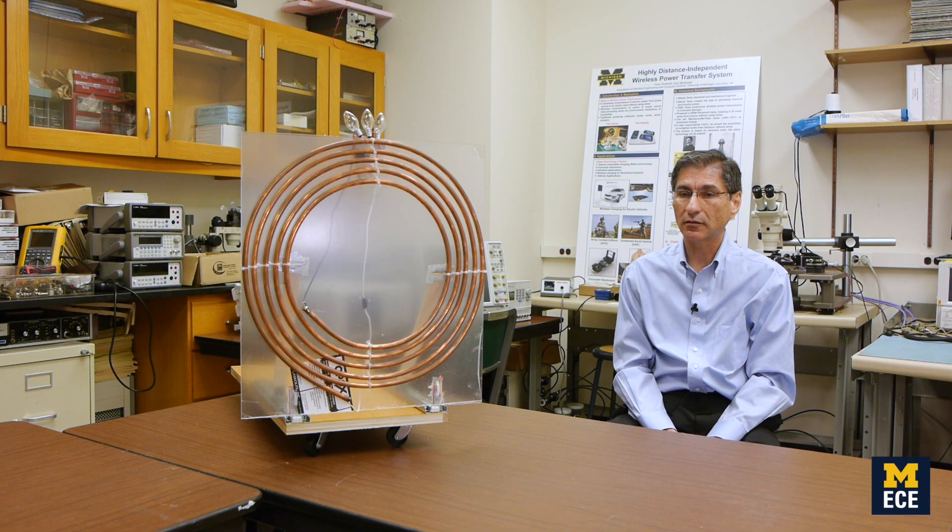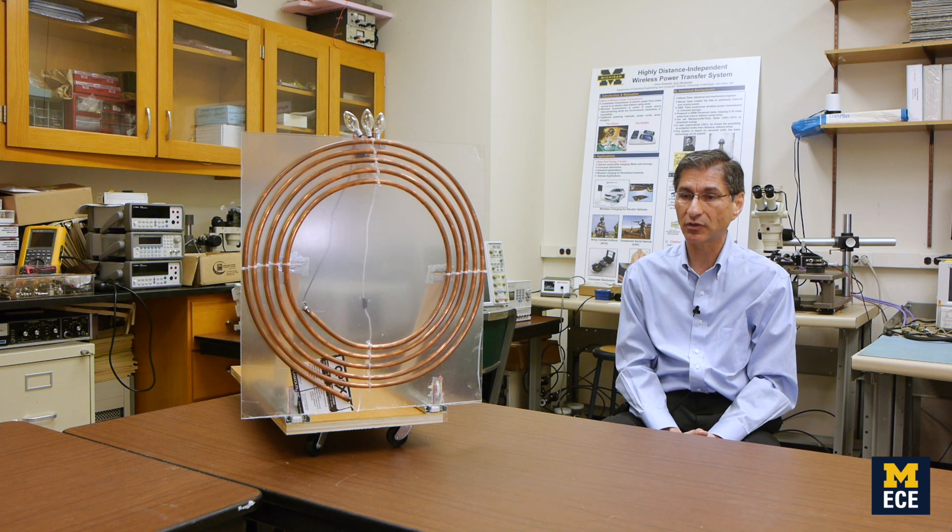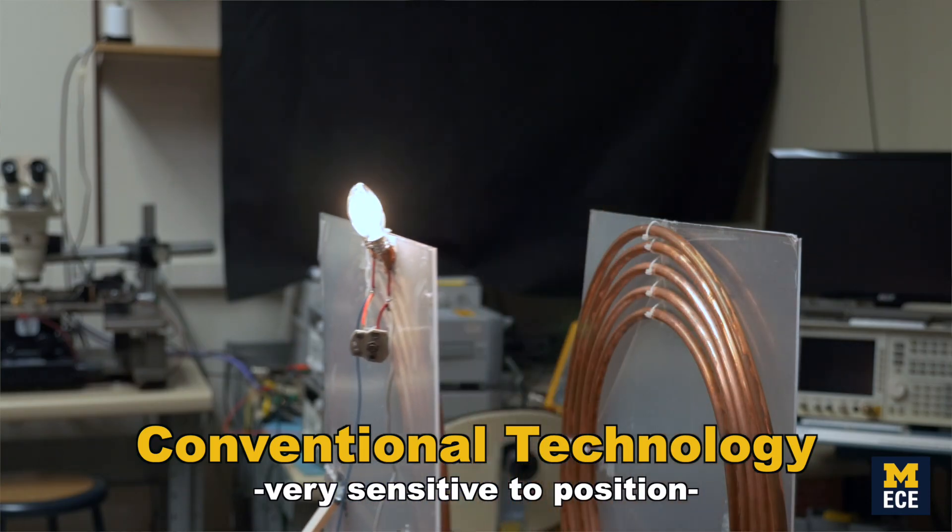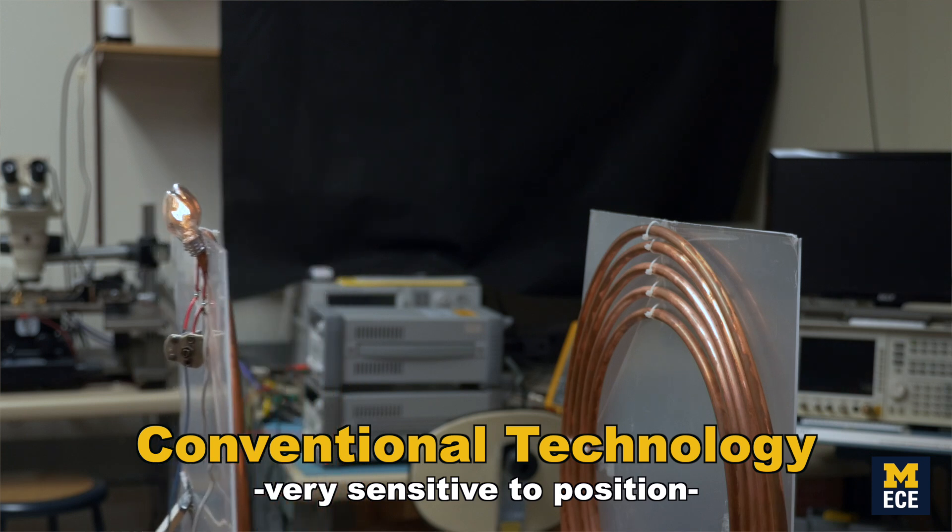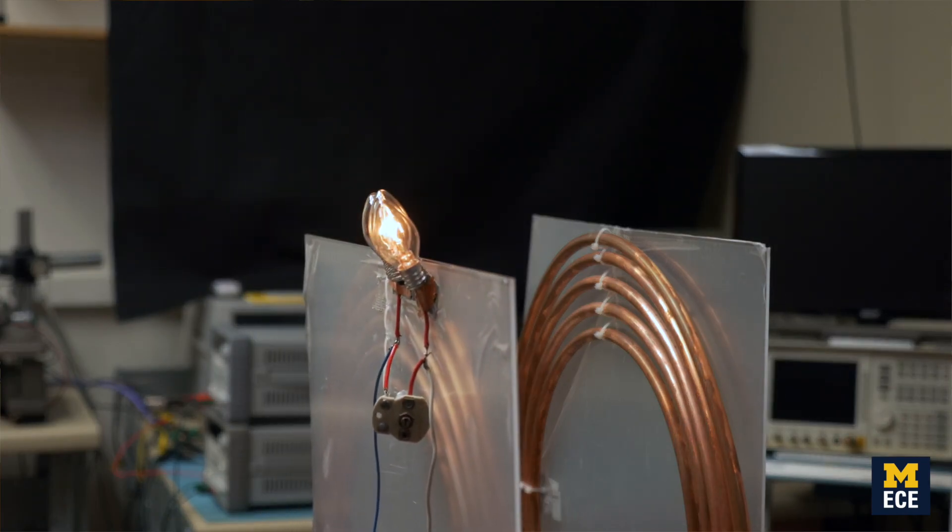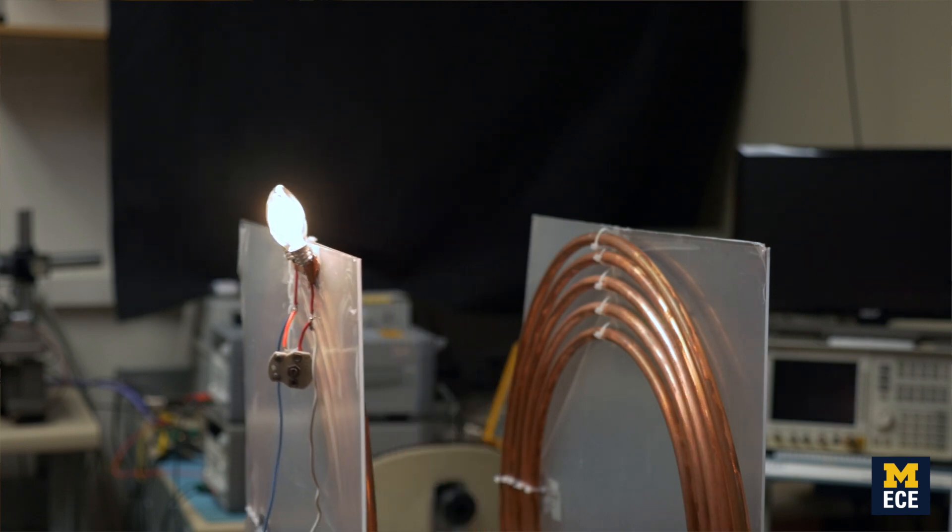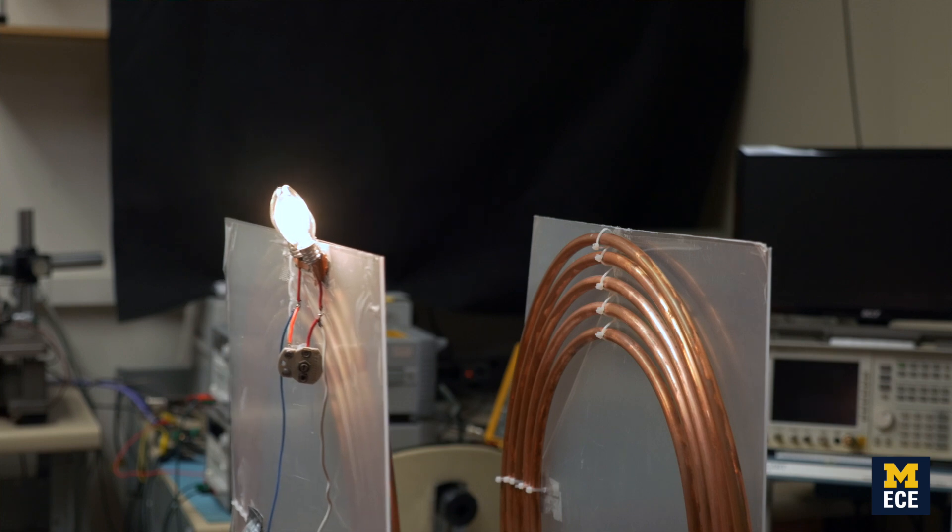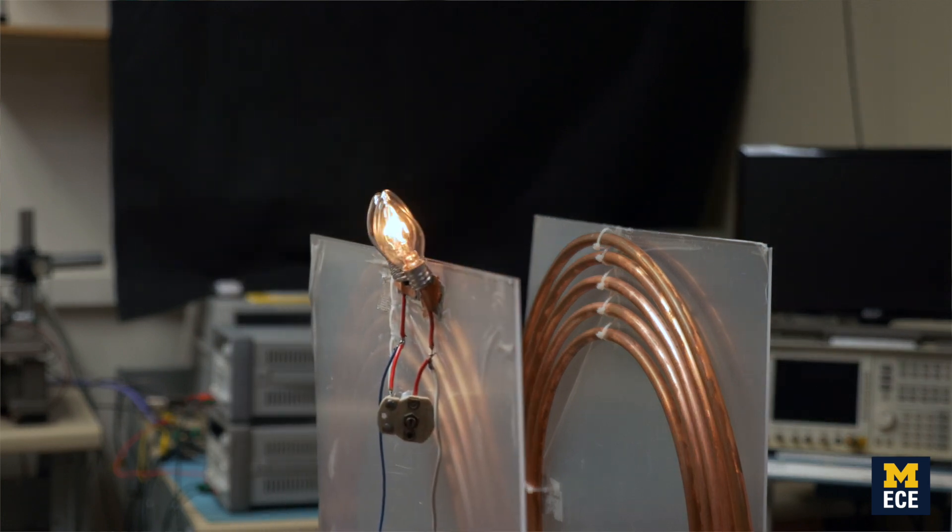Current wireless power transmission systems are very sensitive to distance and misalignment between the transmit and receive coils, and so they must be optimized at a particular distance. If the distance between the transmit and receive coil decreases or increases and the orientation between them changes, the transmission efficiency is significantly affected.